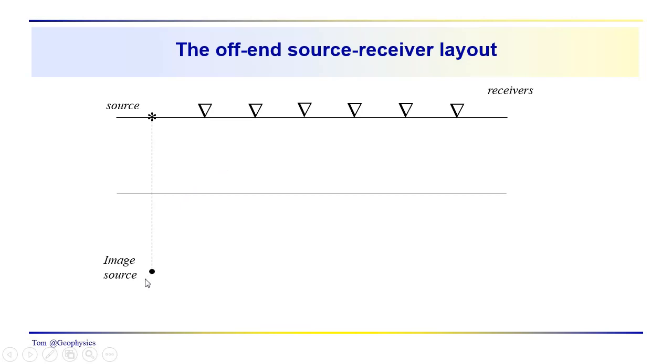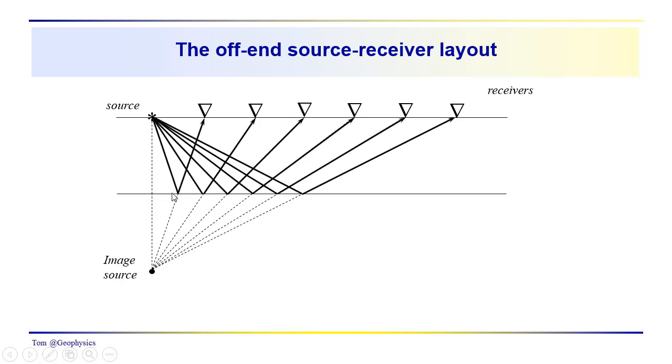And remember, to help you conceptualize what it is that we're seeing, we can draw this image point. We can draw in all these image arrays, which remember the benefit of the image arrays is that they easily locate the position of the reflection point. So we can then draw in the reflection points so that these are the reflection ray paths that we have to each receiver out along the surface. And these are the reflection points again.